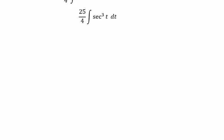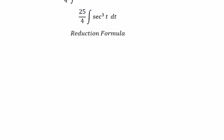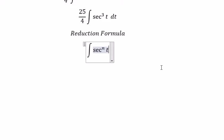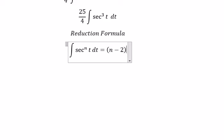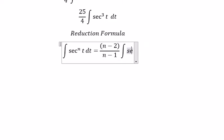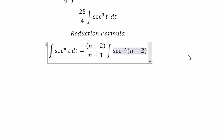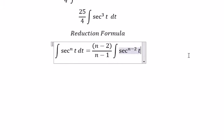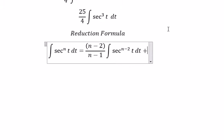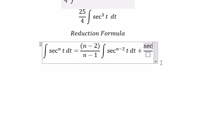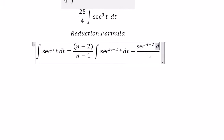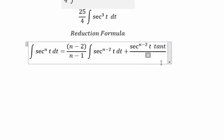Now we can use the reduction formula. The integral of sec(t) to the power of n dt equals (n minus 2) over (n minus 1) multiplied by the integral of sec(t) to the power of n minus 2 dt, plus sec(t) to the power of n minus 2 times tan(t) over (n minus 1).